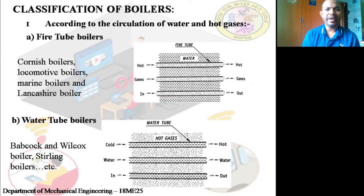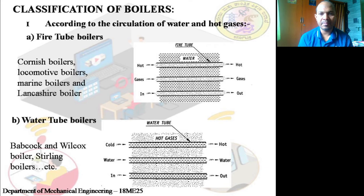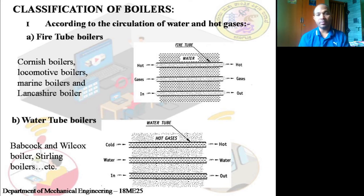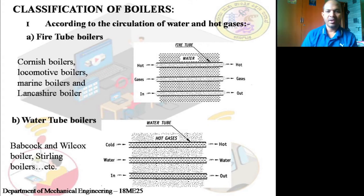Examples of fire tube boilers include Cornish boilers, locomotive boilers, marine boilers, and the Lancashire boiler. Note that the Lancashire boiler comes under the fire tube boiler category. In a fire tube boiler, the flue gases travel inside the pipes while the water covers those pipes from outside.